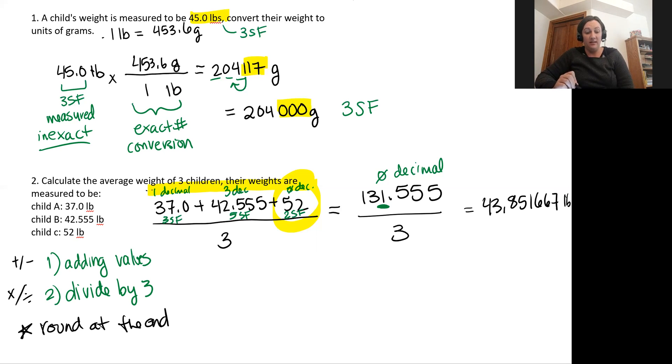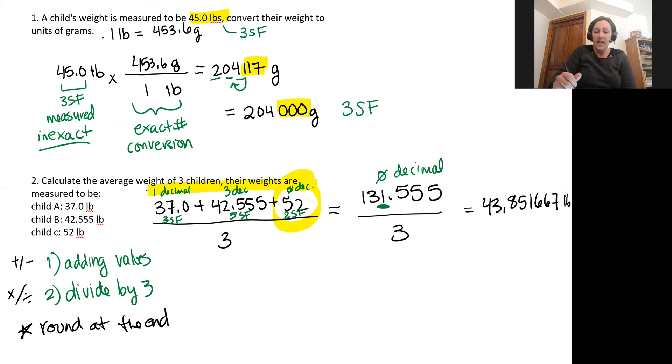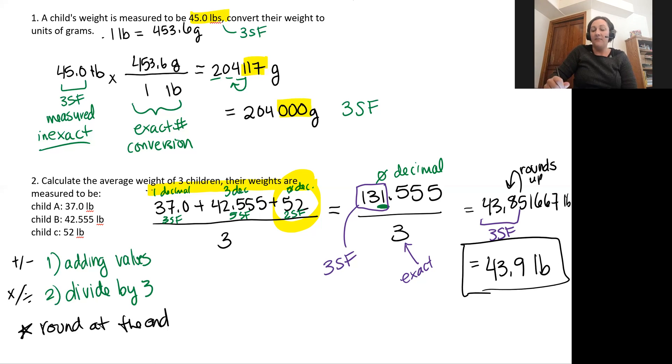Now I'm doing division. So division is going to be the least number of significant figures. When my value of 131.555 is reported with only its sig figs, it would just be 131, and that would be three significant figures. The three, that's an exact value, it's part of my definition of how I calculate average. So I'm going to report three significant figures at the end of my calculation. That's going to give me 43.8, but that five rounds up the eight value. So it'll be 43.9 pounds, and that'll have three significant figures.